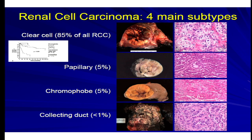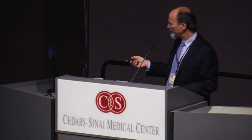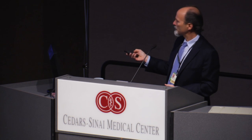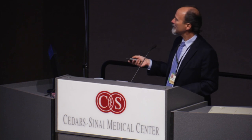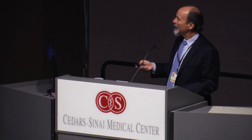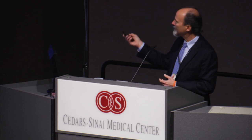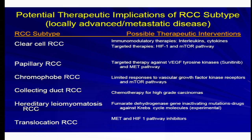The different subtypes behave differently — some behave better than others. So it's really important that we subclassify these renal cell carcinomas based on all those appearances. The subtype categories also respond differently to the different treatment modalities we have available.